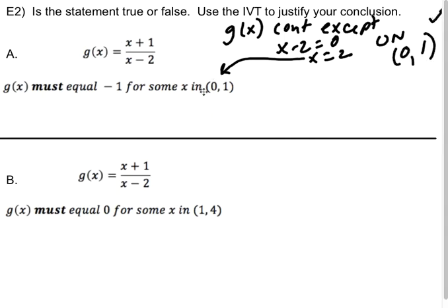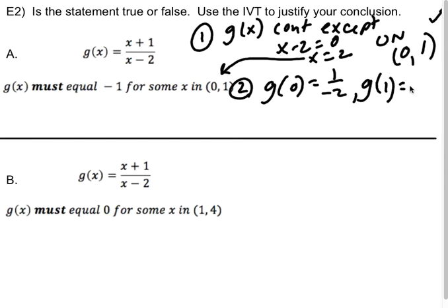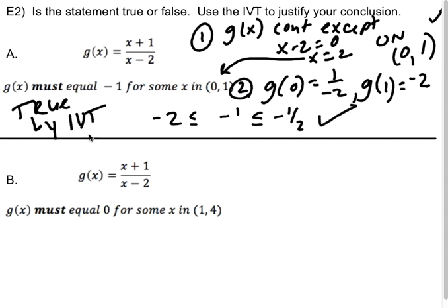Second thing I need to check is that if I find g(0) and g(1), negative 1 falls between them. So the first requirement is met. The second requirement, I find g(0) and I get that that's 1 over negative 2. I find g(1) and I get that that's 2 over negative 1. So negative 2. Sure enough, negative 2 is less than or equal to negative 1, which is less than or equal to negative 1/2. So yes, this is true by the IVT.